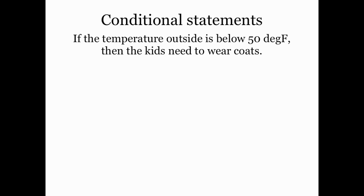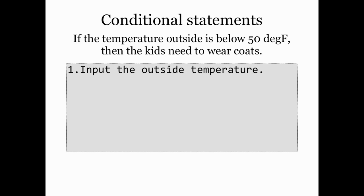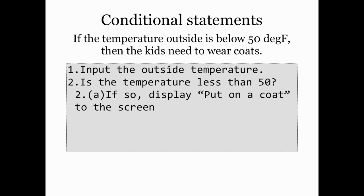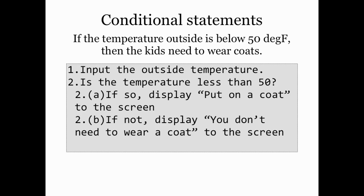So the algorithm would flow like this: first, input the outside temperature into the program, then make a decision — is the temperature less than 50? If so, display 'put a coat on' to the screen. If not, display 'you don't need to wear a coat,' and then simply end the process. That's a well-constructed written algorithm since the scope is well-defined, all the steps are written sequentially, and the one question that has to be answered is clearly a yes-no question.